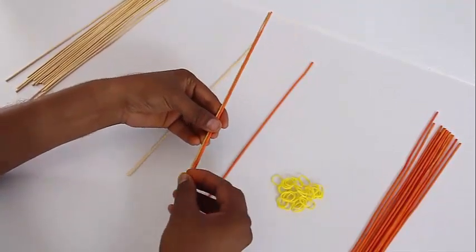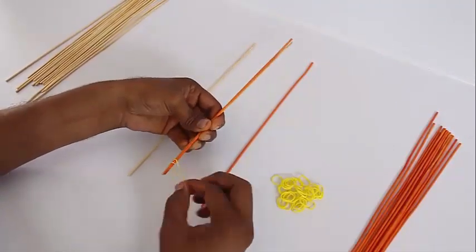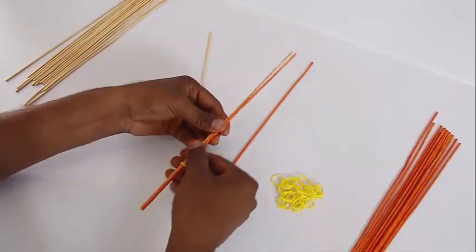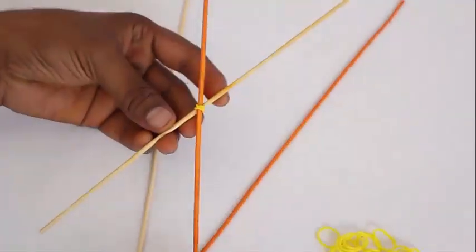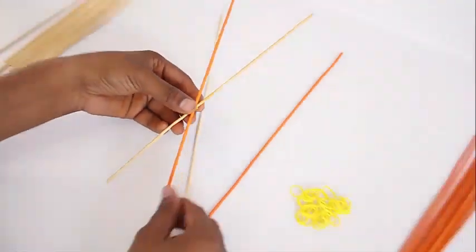Cross two sticks, a yellow stick and a red stick and tie them with a rubber band in the center. Ensure that the red stick is always on the top.